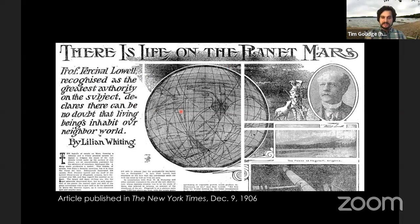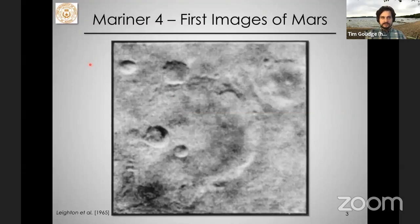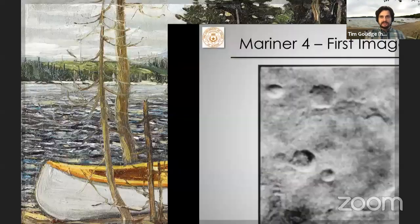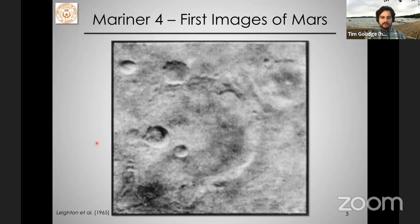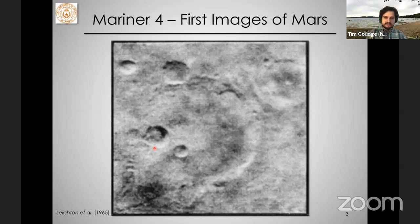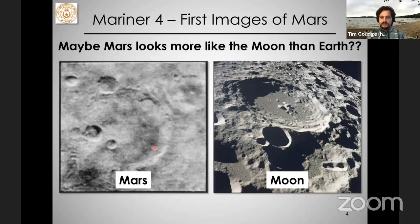From telescopic observations, we think Mars has some of the same features we see on Earth, and in particular these canals were of interest. As NASA began to explore the solar system, there was a lot of excitement around exploring Mars and seeing what it might look like. But when the first images of the surface of Mars came back from the Mariner 4 spacecraft, we saw a planet mostly covered with impact craters.